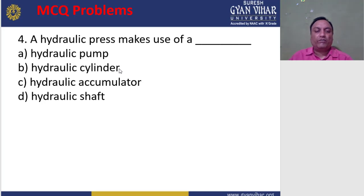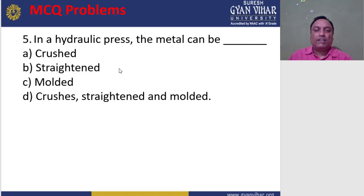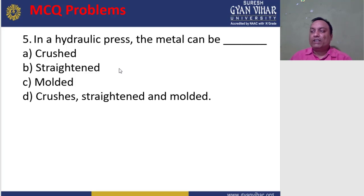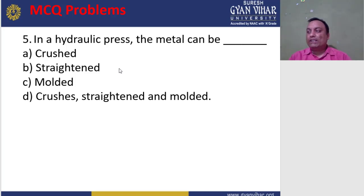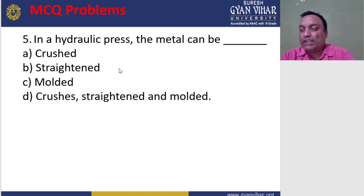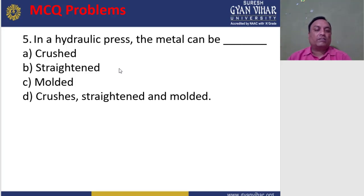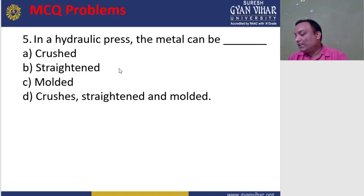Question 5: In a hydraulic press, the metal can be pressed, strengthened, and molded. The metallic material placed in a hydraulic press can be crushed, straightened, and molded. These are crucial features of the hydraulic press. It consists of a bed or plate on which the metal is placed for action. The correct answer is d — crushed, strengthened, and molded.